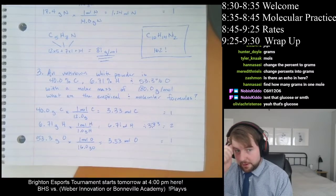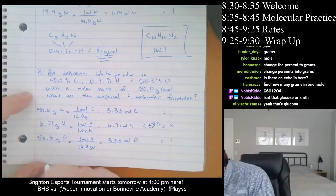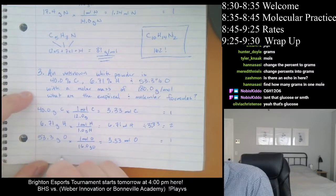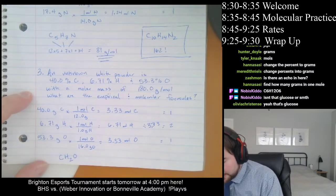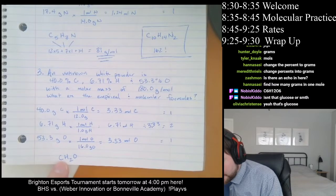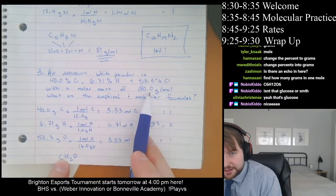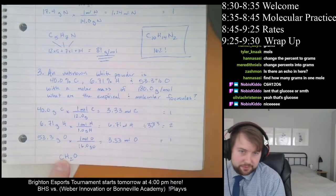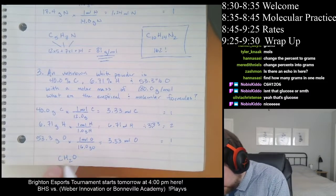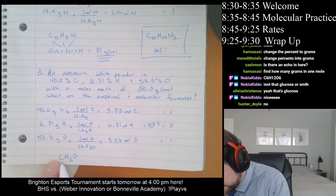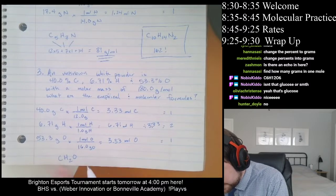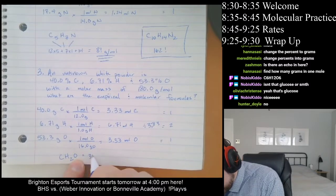So that means our empirical formula is CH₂O. But if we look at CH₂O — does it have a mass of 180? No. CH₂O: if we add it up, 12 plus 1 times 2 plus 16, that is 30.